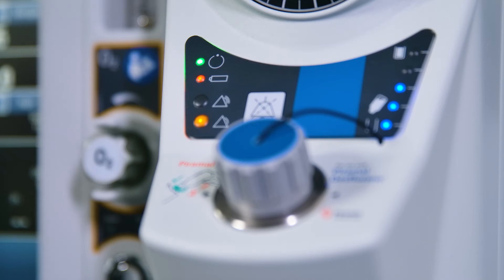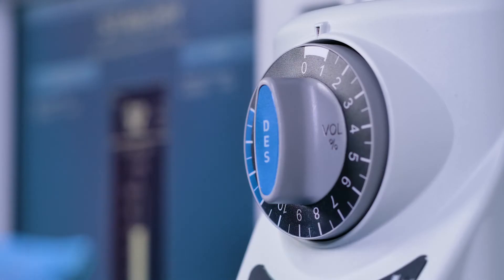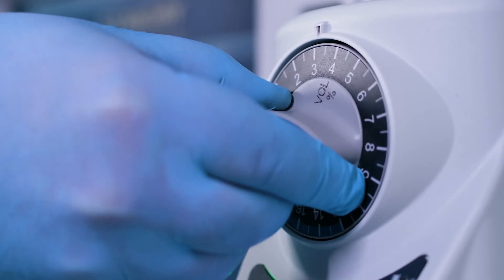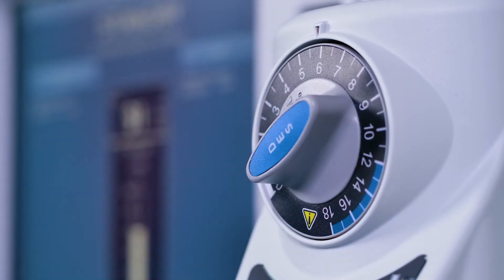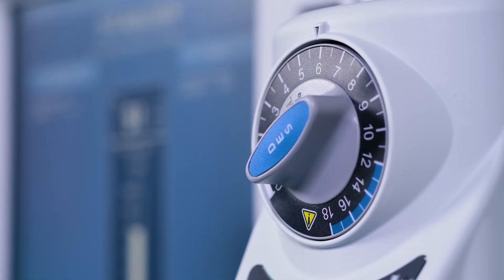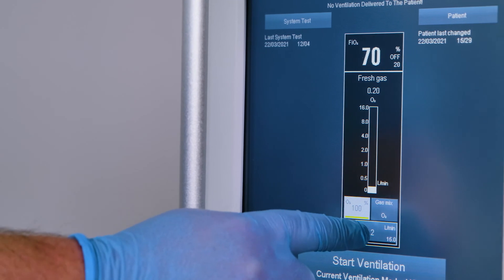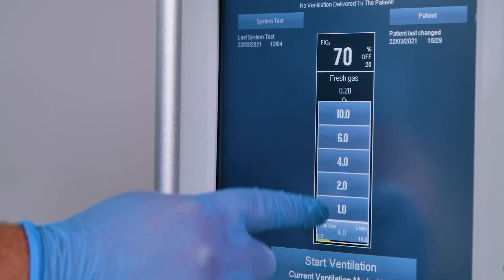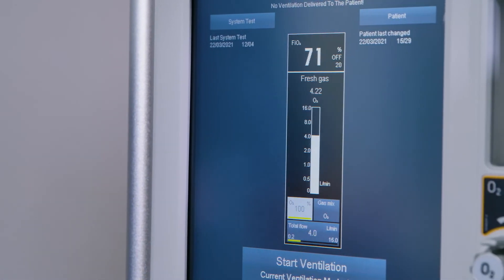A fully charged battery will power the vaporizer for a minimum of 5 minutes at a set concentration of 6% and a fresh gas flow of 4 litres per minute. At higher settings, the backup period may be shortened.